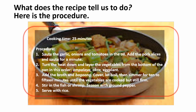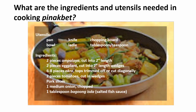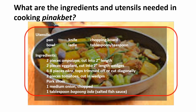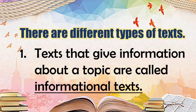This type of text is a procedural text. Let's proceed with the next question: what are the ingredients and utensils needed in cooking pinakbet? This is the part where we can find the answers. A list of ingredients and utensils is an example of a text that enumerates.